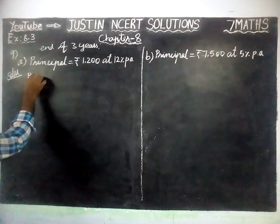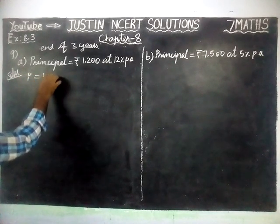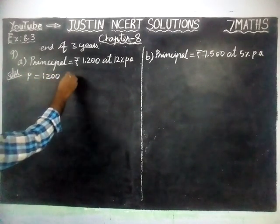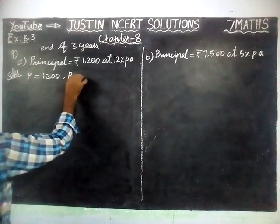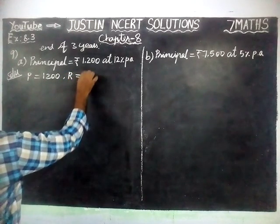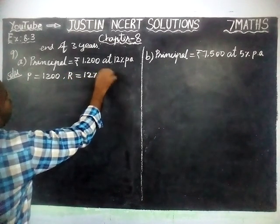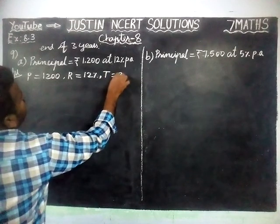Solution: P is equal to 1200, Rate of Interest is equal to 12%, and Time is equal to 3 years.